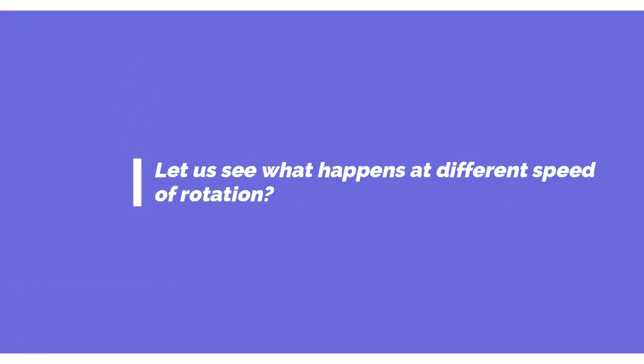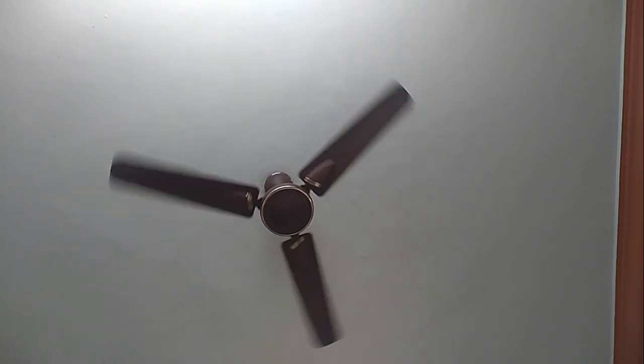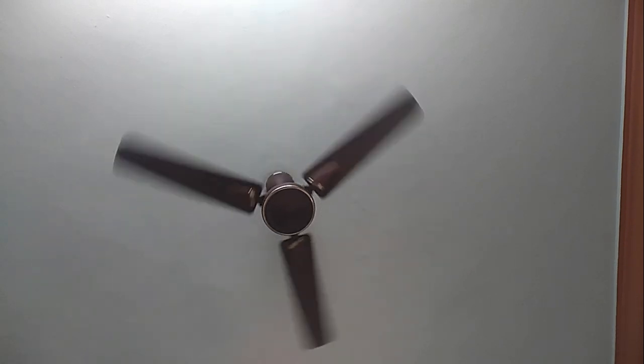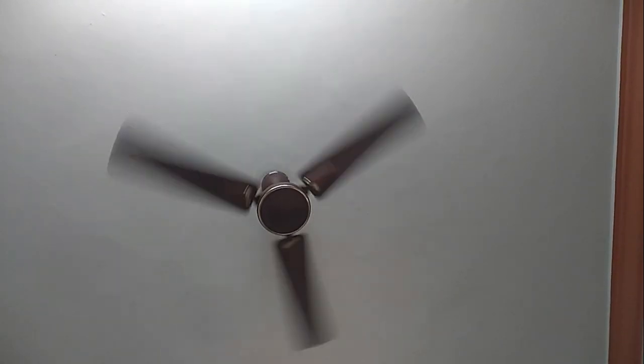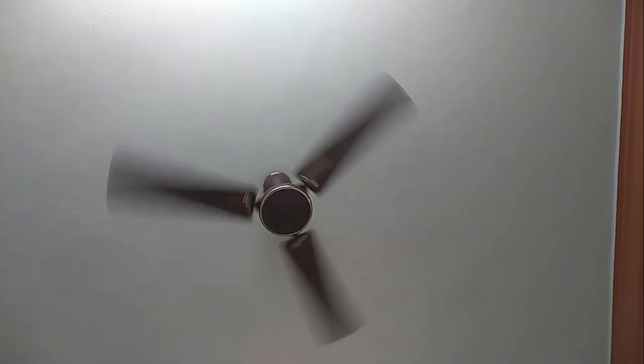Let us check this now with a practical example. Take your mobile phone now and open the video recorder. Switch on the ceiling fan at your room and operate it at the slowest mode. Now look at the rotation of the fan through your video recorder. At slower speeds, you can see the actual direction of rotation of the fan in your mobile.